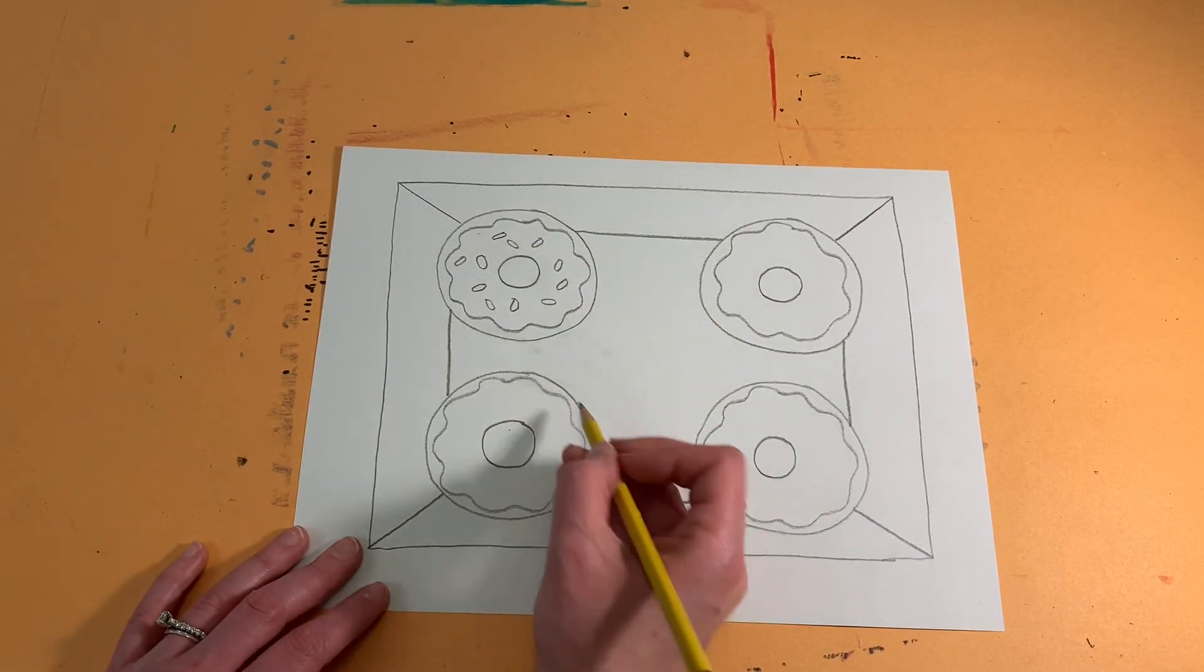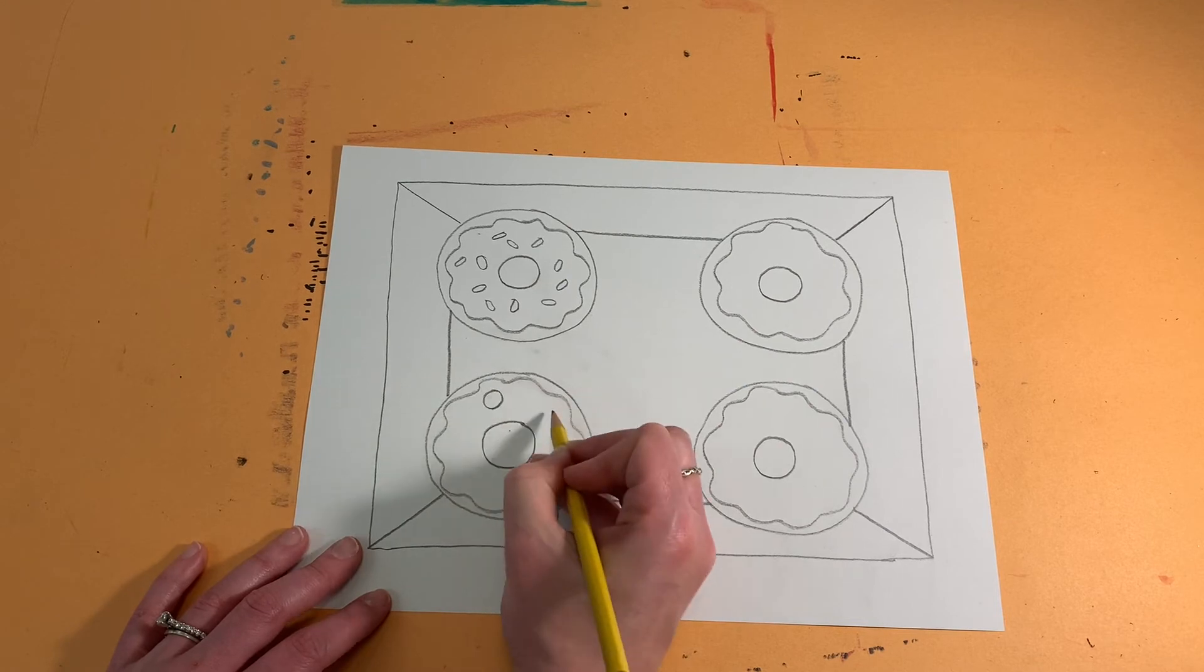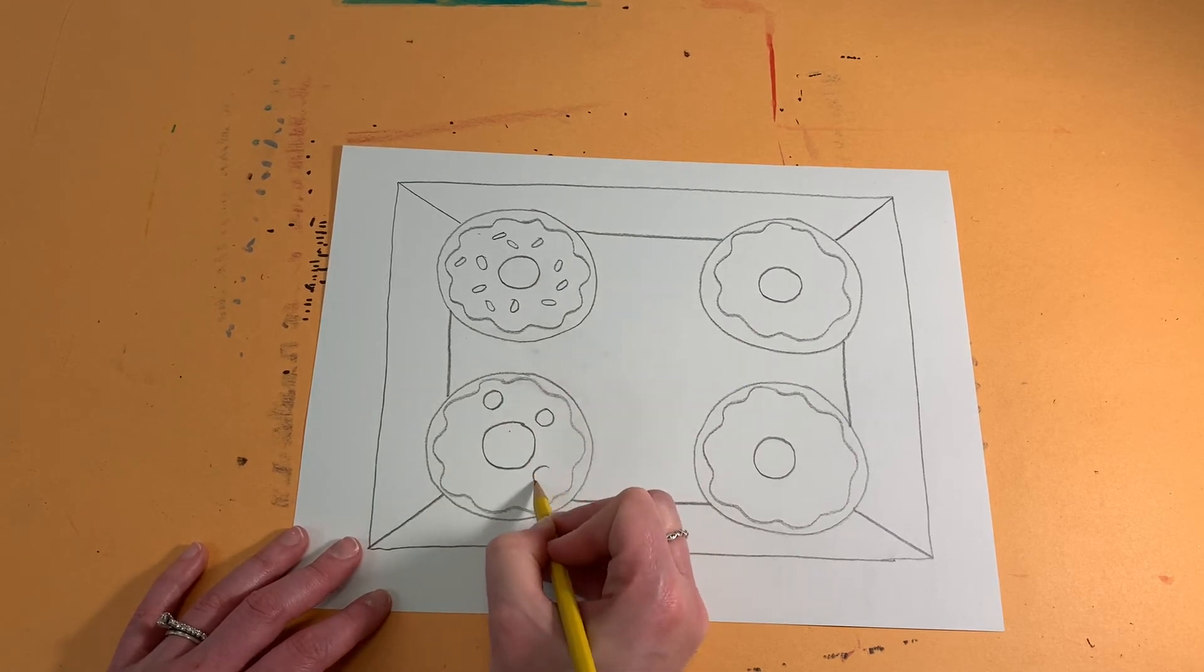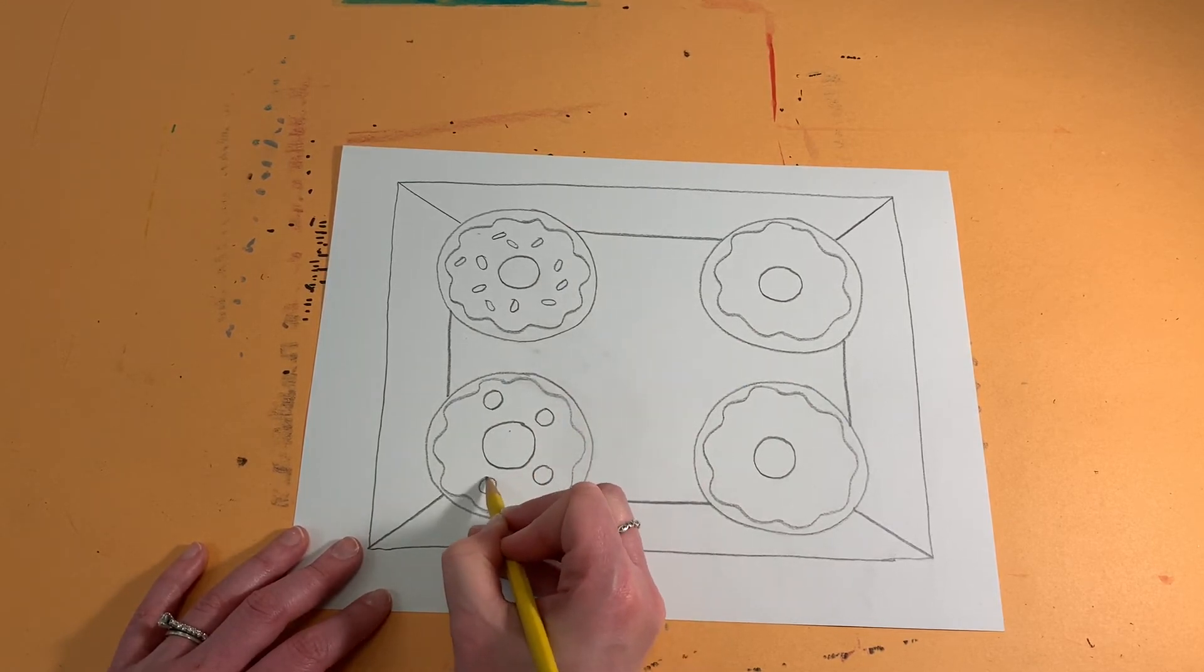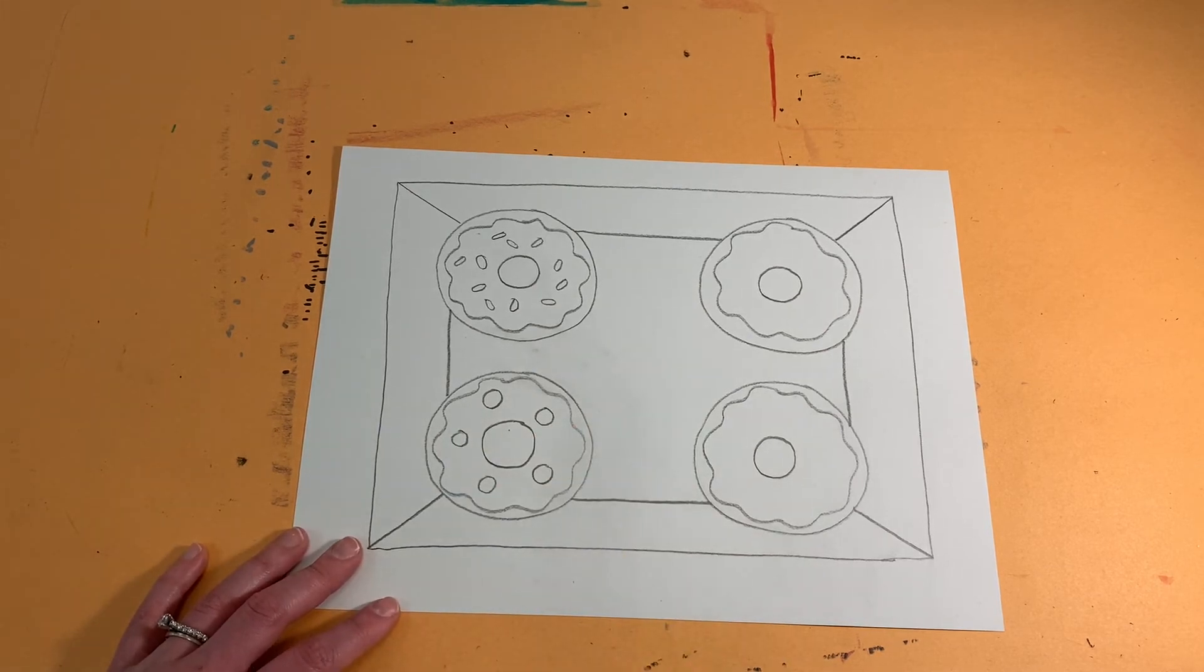All right, maybe this one has M&Ms on it. Maybe it's an M&M doughnut. So I'm just going to make some circles and then I'll go back in and color and add the M's at the end.